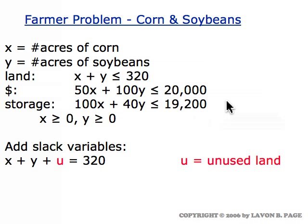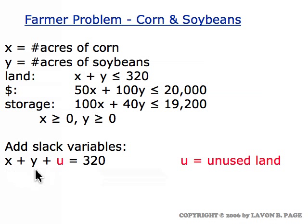To apply the simplex method to this problem, the first thing we have to do is take each of the constraints and add what is called a slack variable. The first constraint is the land constraint, X plus Y less than or equal to 320. We add a new variable U to turn the inequality into an equation. U represents unused land — the acres not planted in either crop.